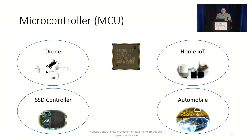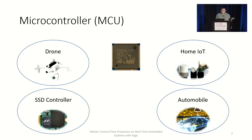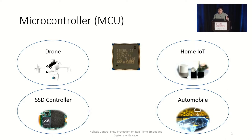Microcontroller-based embedded systems are being used everywhere. These low-power and cheap processors are being used in areas including drones, home IoT devices, even components inside solid-state drives as the SSD controller, and in automobiles. These microcontrollers are extremely resource-constrained, just like processors from decades ago. They contain no virtual memory, no trust zone, and run at very low frequencies. Unfortunately, these limitations cause the device to lack proper security protections against the control flow hijacking problem.